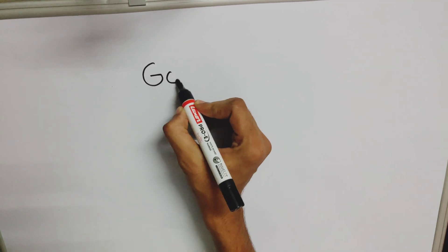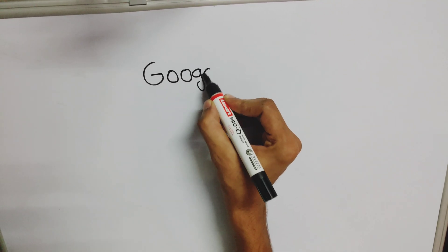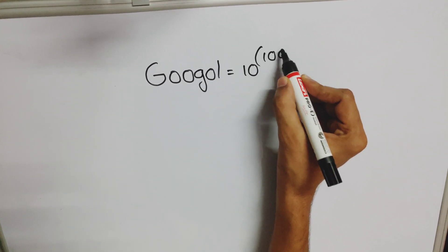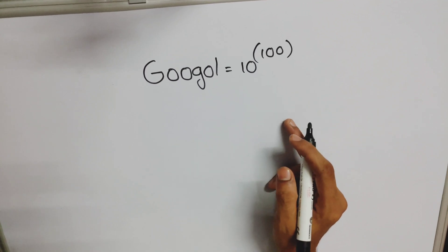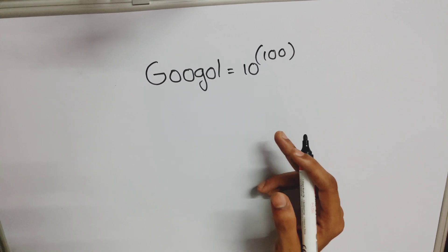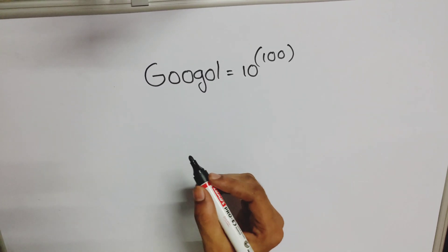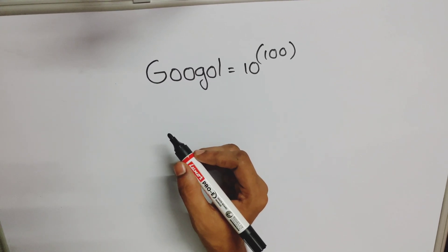Can you visualize how big a Googleplex is? In this video, let us try to explore and visualize the magnitude of Googleplex. But before that, first let us have a look at Google. The value of Google is equal to 10 raised to the power of 100, but this is its scientific notation. If you want to represent the number in actual standard form, we need to write all its digits.